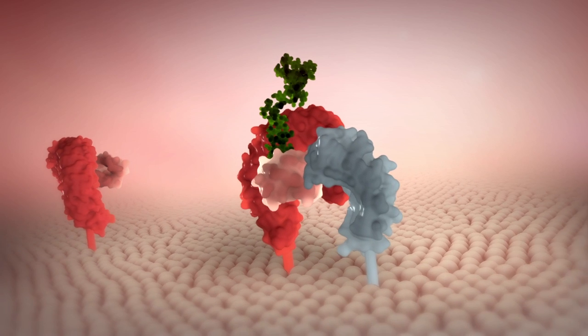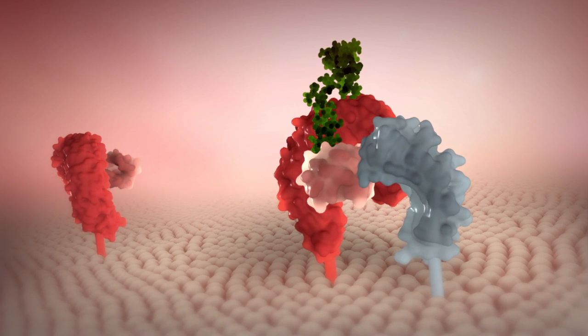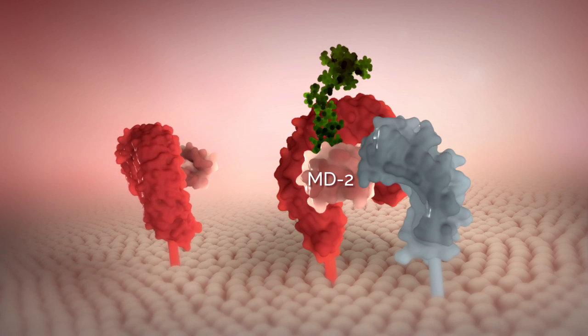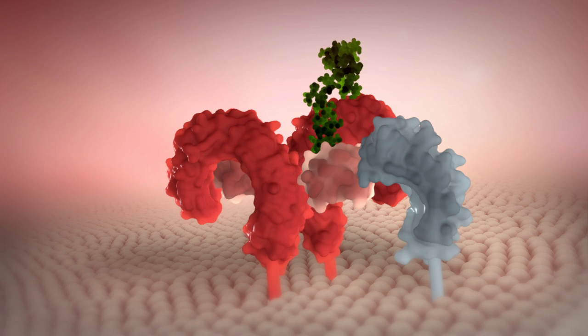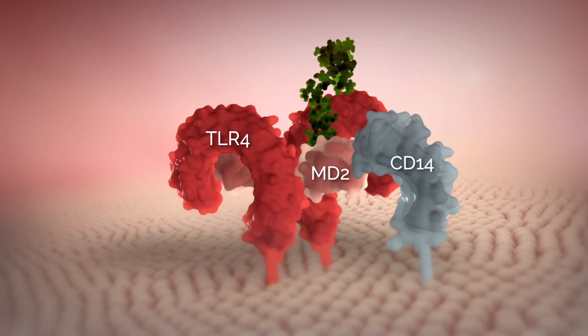TLR4 is able to detect LPS with the help of an accessory protein called MD2. Homodimerization of TLR4 ectodomains are induced when LPS binds to the complex of TLR4, CD14, and MD2.